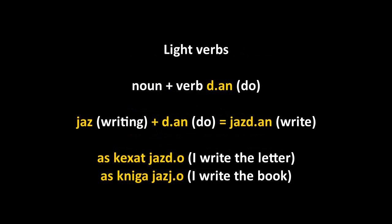Chechen is also rich in light verbs — a noun plus a verb — as a way to create new verbs based on nouns, because in Chechen you can't create new verbs directly. So yaz is 'writing' and dan is the verb 'to do,' making yazdan 'to do writing,' i.e., 'to write.' But dan is a prefix verb, so it agrees with its object. As kechat yazdu means 'I write the letter' — kechat is a D noun. But kniga is a Y/J noun, so as kniga yazju — the D prefix changes to J to agree with the object.